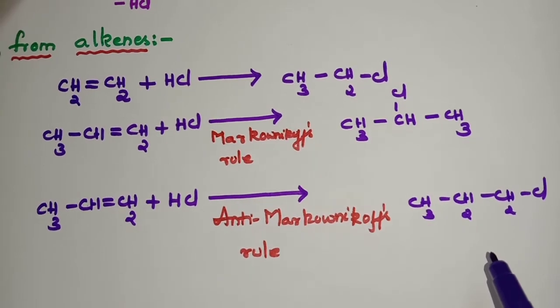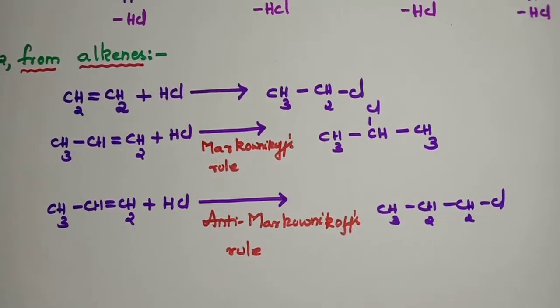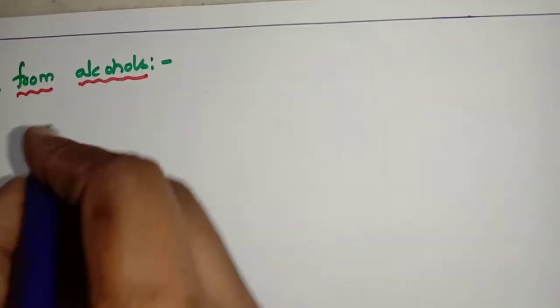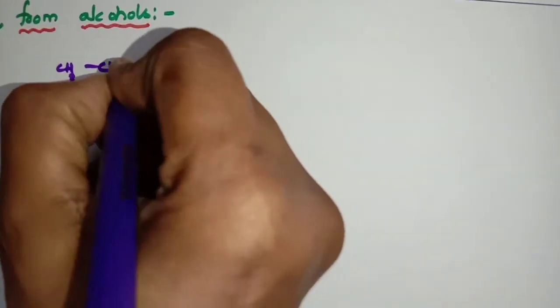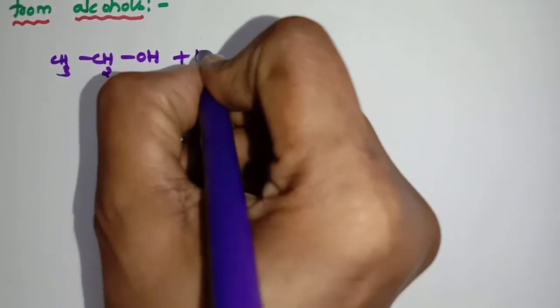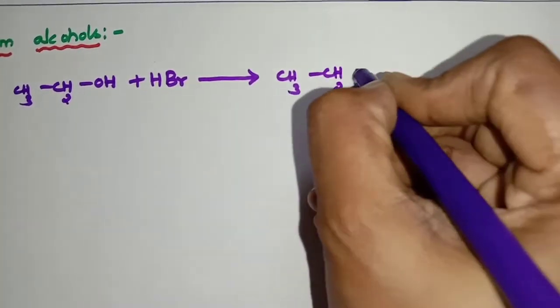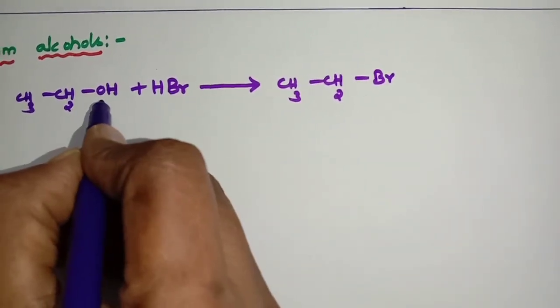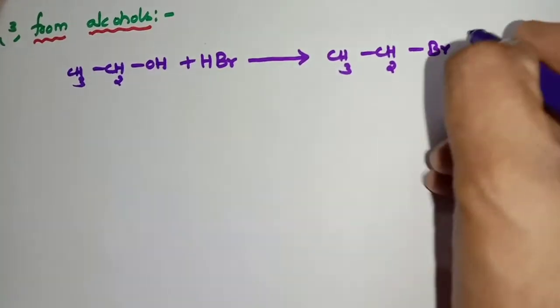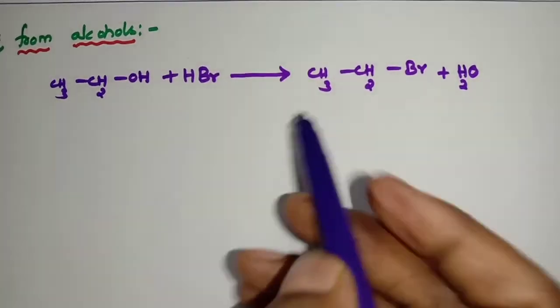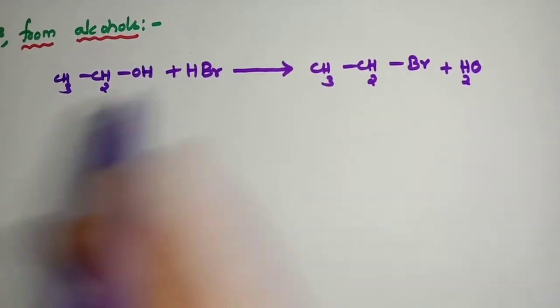So this is how we prepare alkyl halides from alkenes. Third method — put the side heading: from alcohols. Let me take CH3CH2OH, which is ethyl alcohol. Ethyl alcohol plus HBr gives CH3CH2Br — that means Br replaces OH, and H plus OH minus comes out as water. So we get ethyl bromide plus H2O.